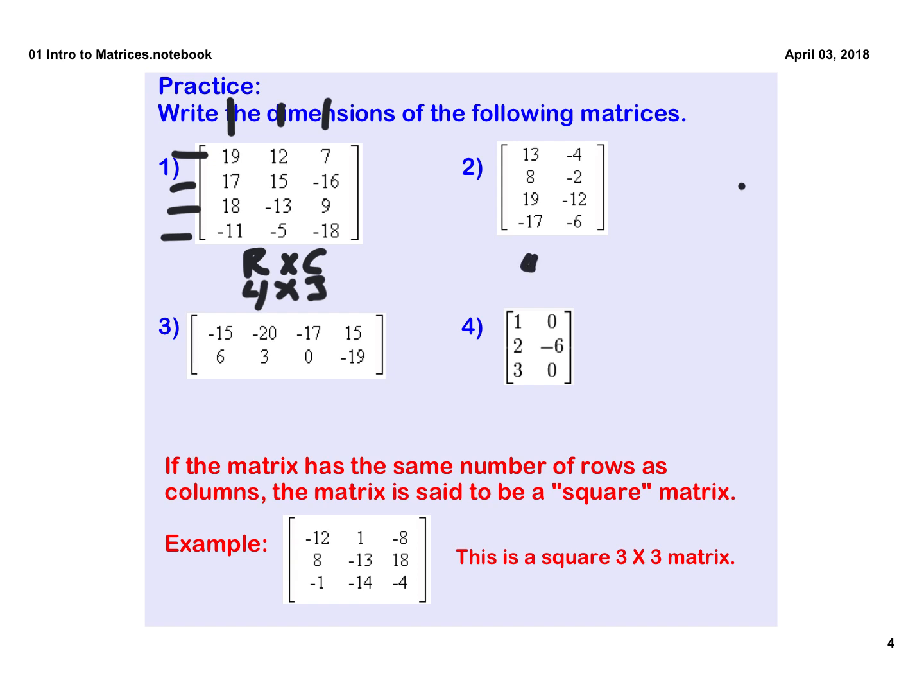This one has 4 by 2. This one has 2 by 1, 2, 3, 4 columns holding up the building. This one's got 3 by 2. And if it's the same, like a 3 by 3, then that's called a square matrix.